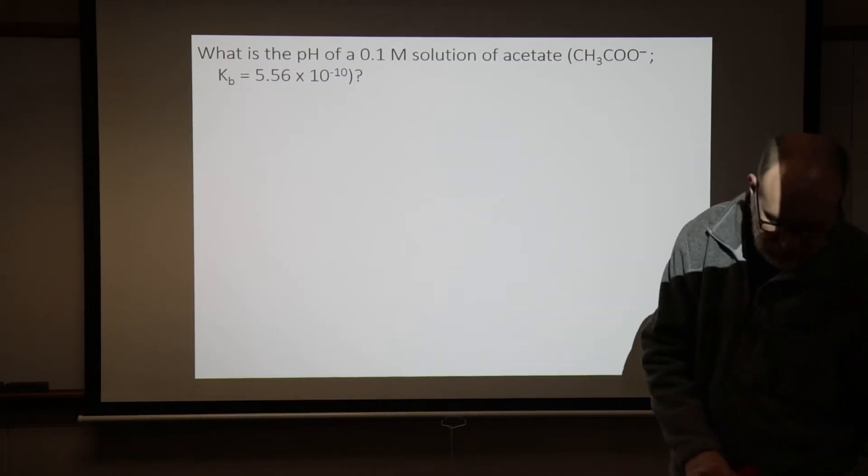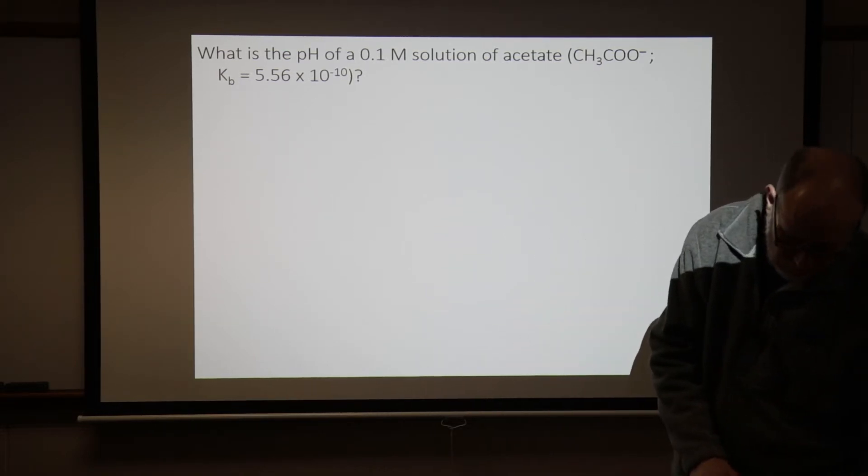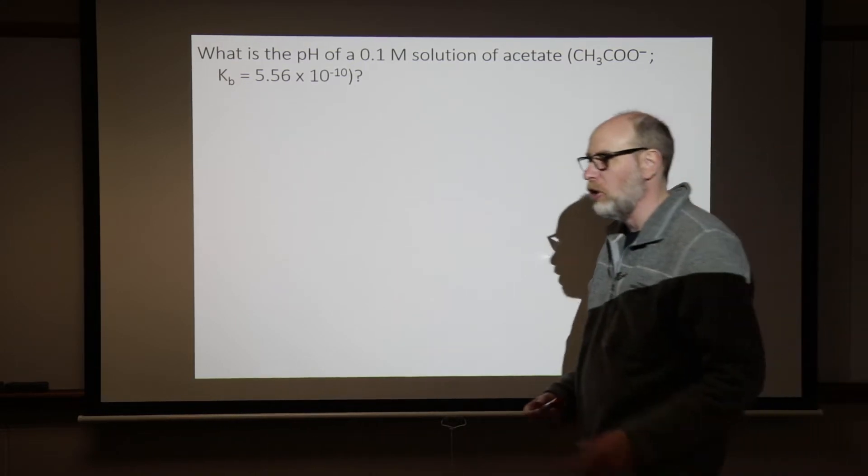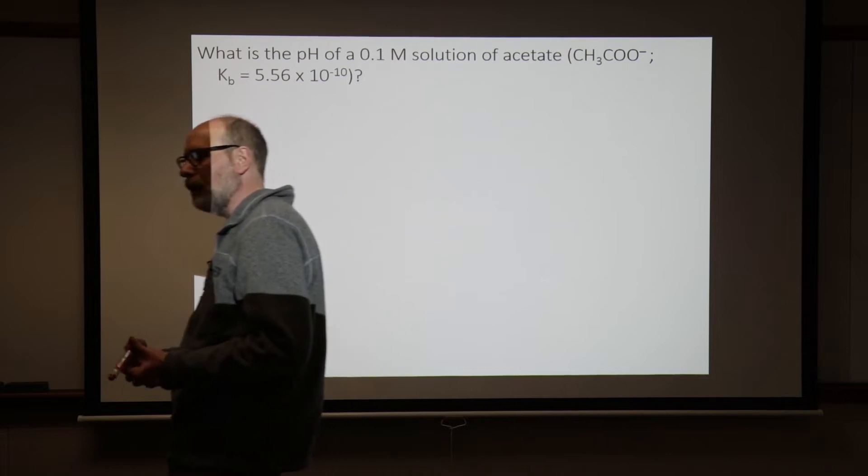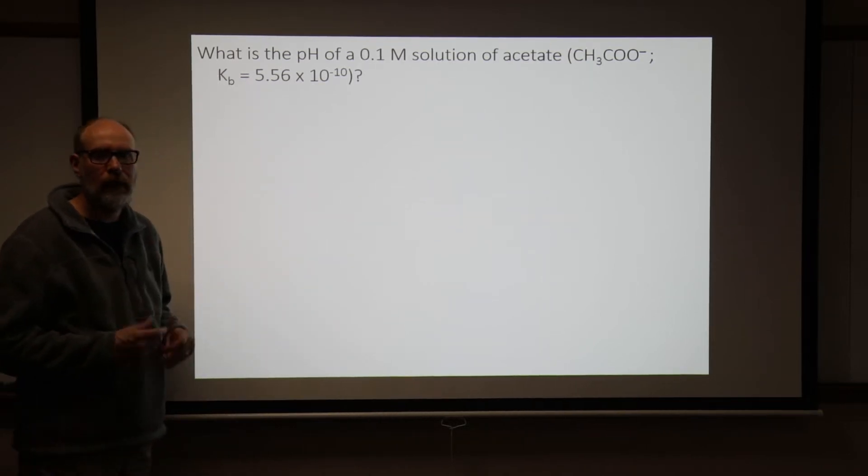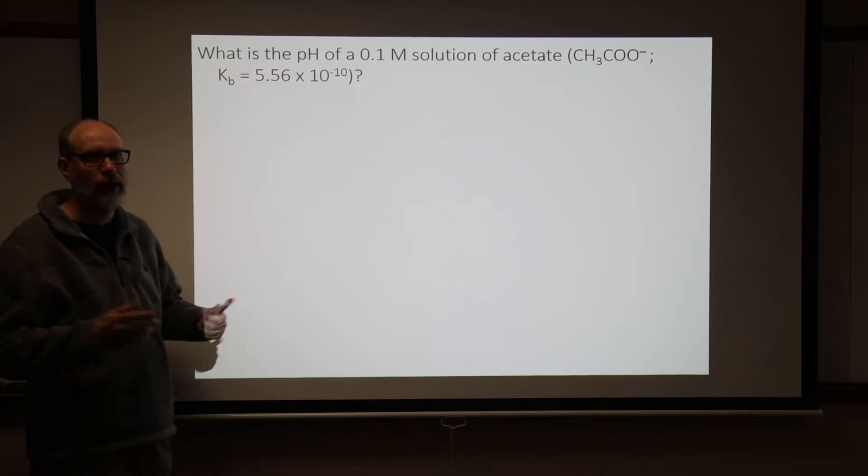And we're going to talk just a little bit as we get a little bit further through this. We're going to talk about how it is that we might determine the KB from the KA because the two are related in a very straightforward mathematical expression.